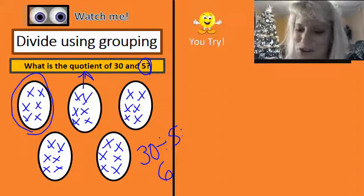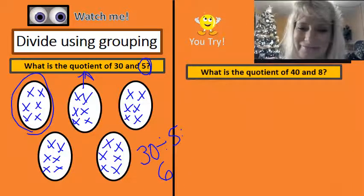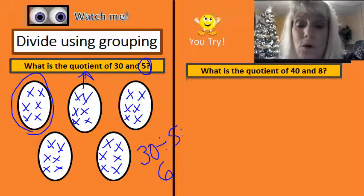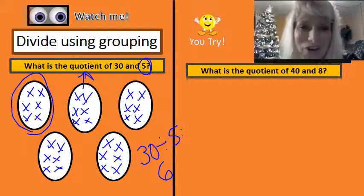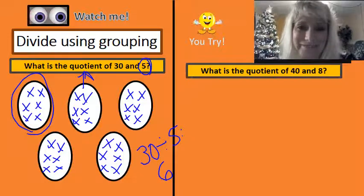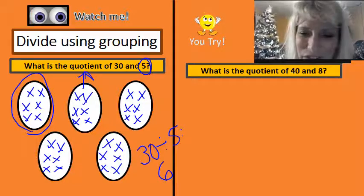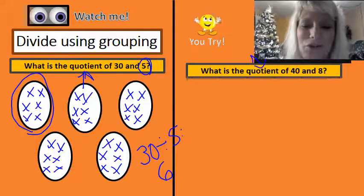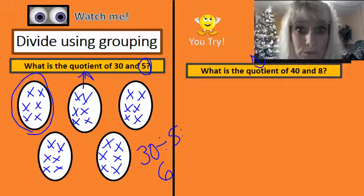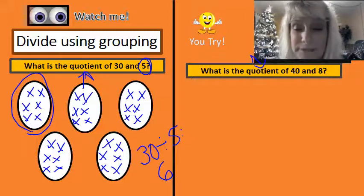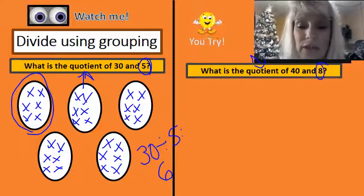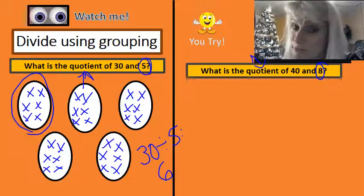All right, it's time for you to try one. I want you to tell me what is the quotient of 40 and eight. I'll wait right here while you try it and then come on back. Okay, did you notice that you're looking for the quotient, which means you are trying to find the answer to a division problem, which means your number is going to be smaller than 40. You want to put them into eight groups — did you do that?